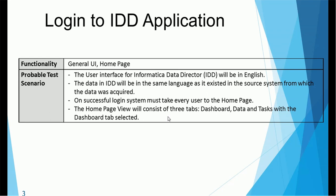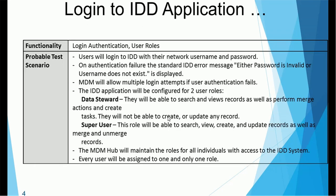On successful login, it will take us to the home page. When you access the IDD application URL provided by admin, it will ask for a username and password. If credentials are correctly provided, it will take us to the home screen. The home page will consist of three tabs: Dashboard, Data, and Tasks. This is for legacy IDD. If you are using Entity 360, you will have a different look and feel, and the home page — also known as the start page — can be configured and can have multiple components.